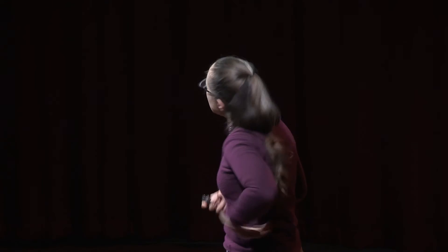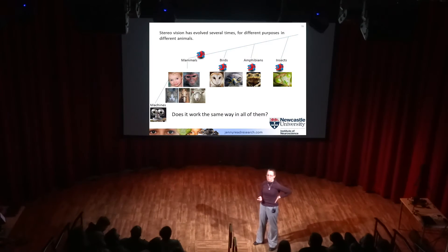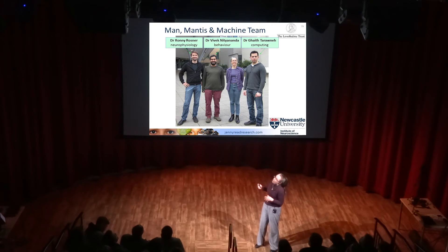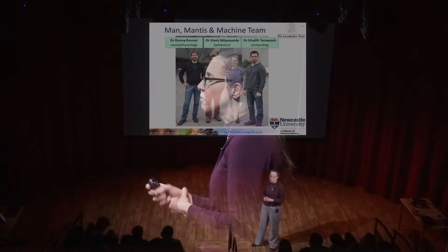When I discovered that, I was really excited. It raises the question of how many times 3D vision evolved. We believe it evolved in the common ancestor of all mammals, separately in birds, separately in amphibians, and separately in insects whose eyes are completely different. So evolution has discovered 3D vision at least four times, possibly more. I wondered: does insect 3D work the same way as human 3D, or does it work in some completely different way? No one had really attempted to answer those questions since Rossall, so I wrote a grant application to the Leverhulme Trust and we started the Mantis and Machine project, comparing stereo vision in humans, praying mantises, and machine vision algorithms.